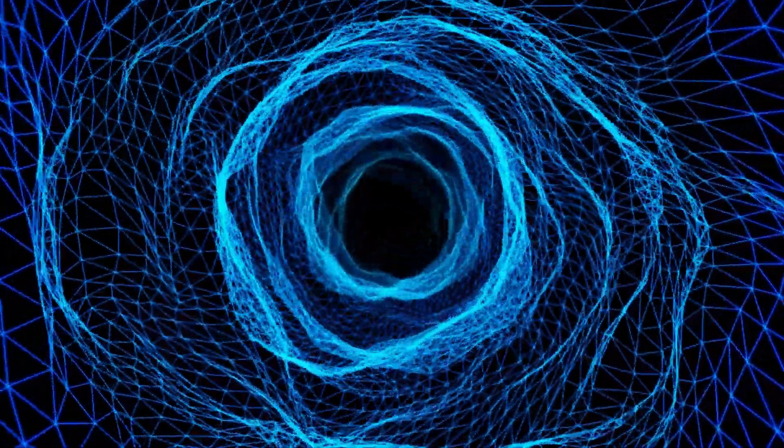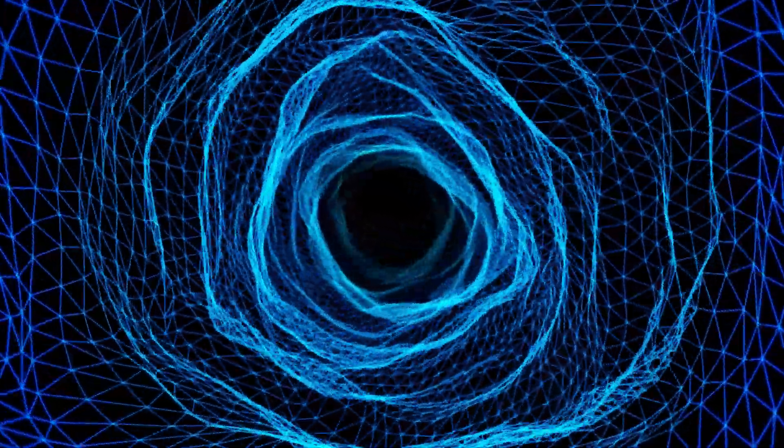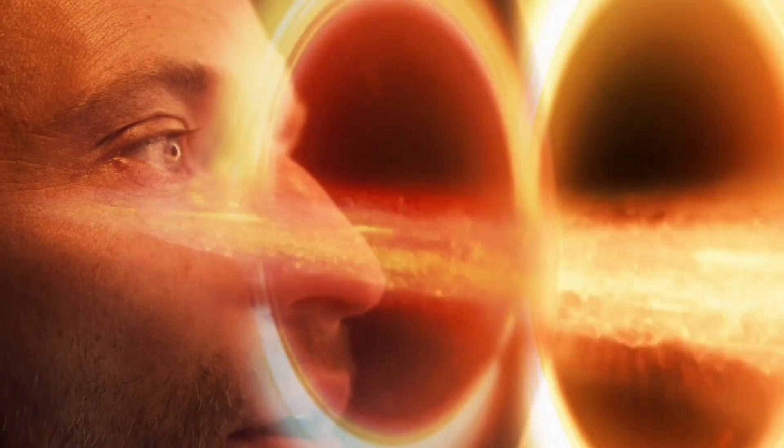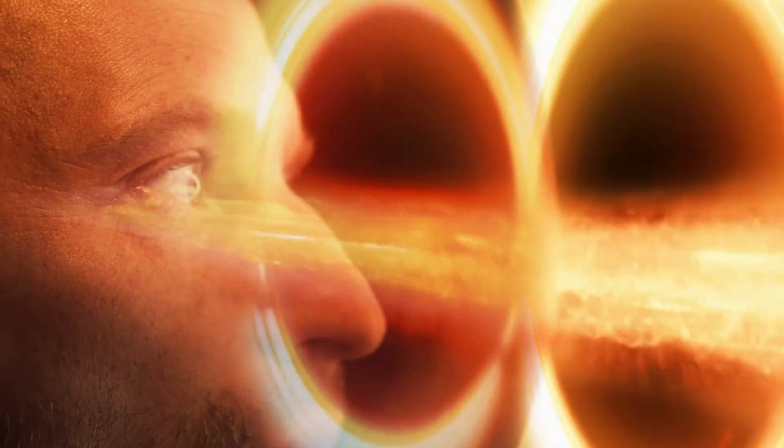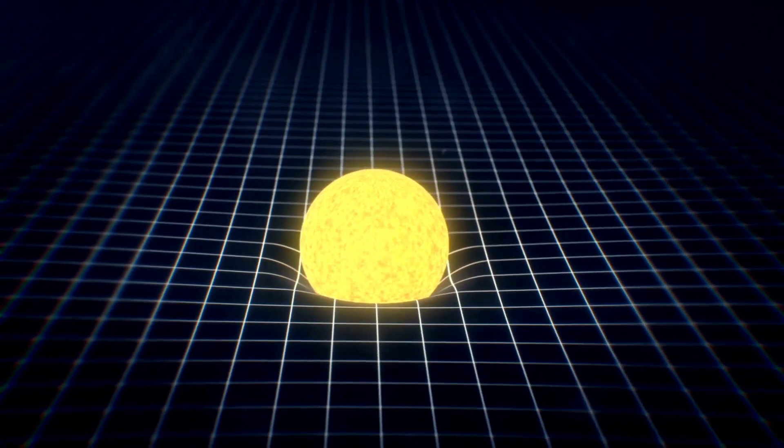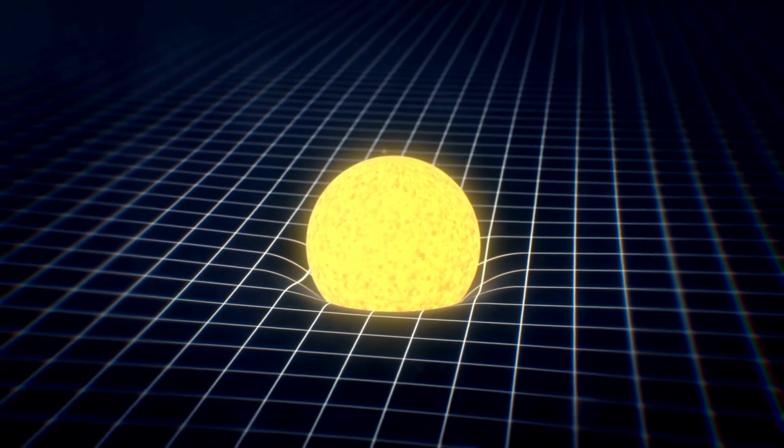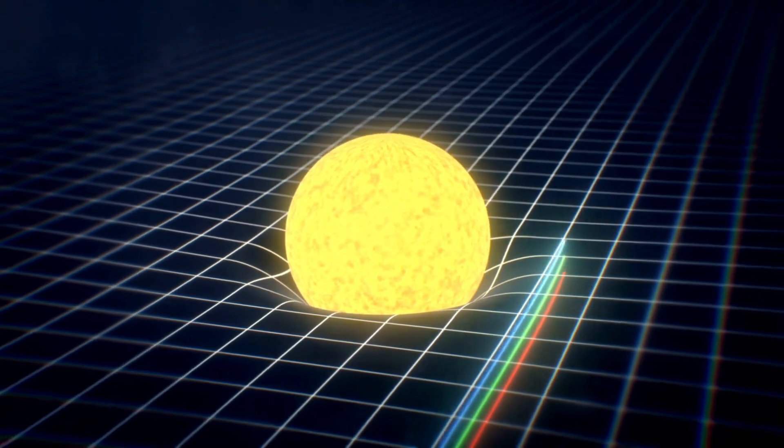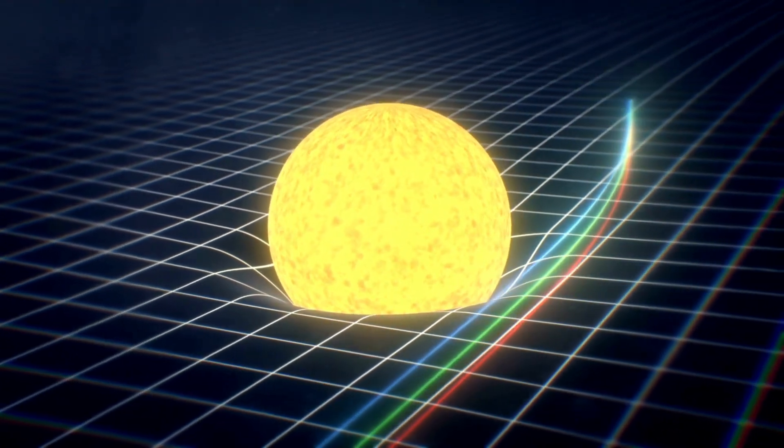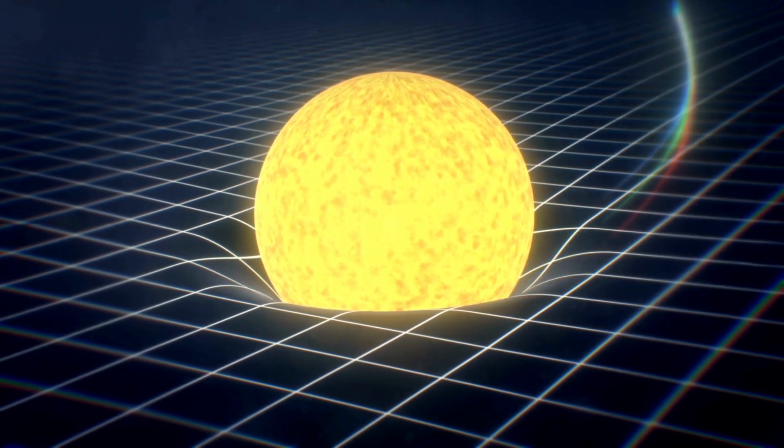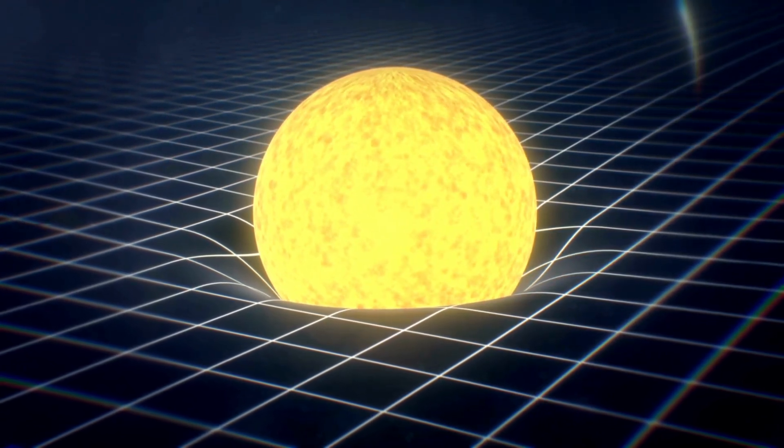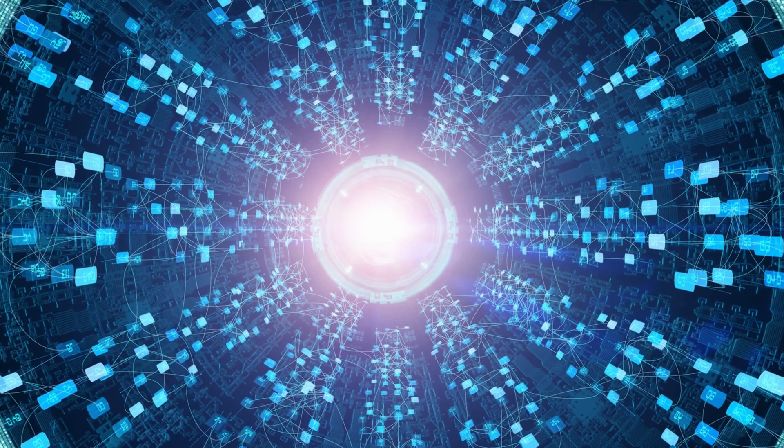Temporal lensing adds another layer of complexity to wormhole travel. The intense gravitational forces near the entrance and exit points could lead to time dilation, a phenomenon where time passes at different rates depending on one's position. Traveling through a wormhole might result in time dilation effects, making time travel and causality considerations an integral part of the journey.